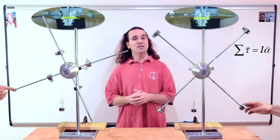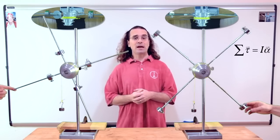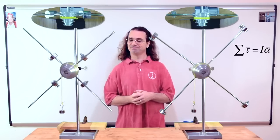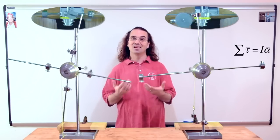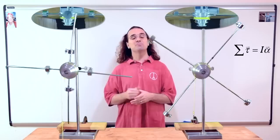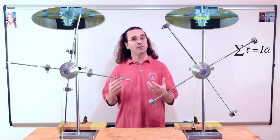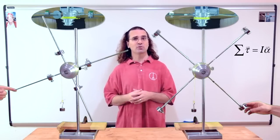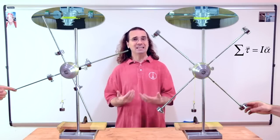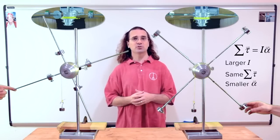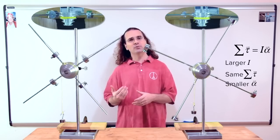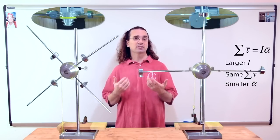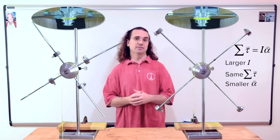Let's see if that is correct. As you can see, moving the masses farther from the axis of rotation increases the rotational inertia of the system, which decreases the angular acceleration of the system.